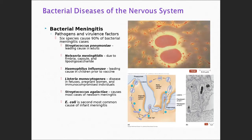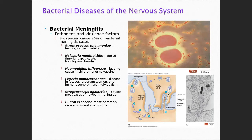E. coli is the second most common cause of infant meningitis. We typically see this associated with babies who are premature, immunocompromised, or in a hospital setting, because E. coli is rampant in hospitals. If I ask what the most common etiology of meningitis in the elderly is, the answer is Streptococcus pneumoniae. If I ask about the second most common cause of infant meningitis typically associated with nosocomial infections, that's E. coli.